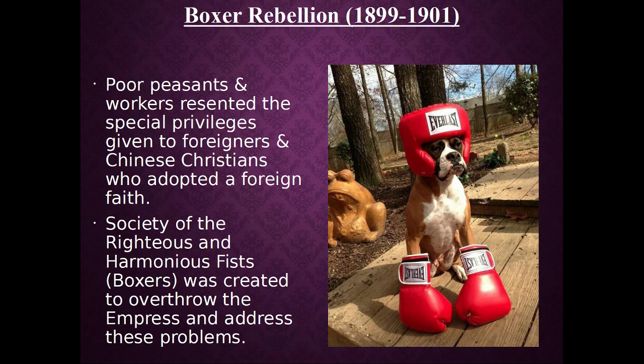China has one more problem — it's the boxers. Those poor peasants and workers are still not thrilled with their lot in life. They still really don't like foreigners, and they really don't like foreign ideas, including Christianity — they are very anti-everything foreign. Some of them form this group called the Society of the Righteous and Harmonious Fists, which is a really cool name but really long, so they just get called the boxers. They decide they're going to overthrow the empress of the Qing dynasty, set up their own government, and kick out all the foreigners.